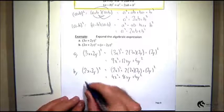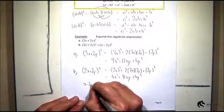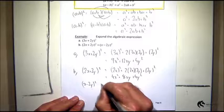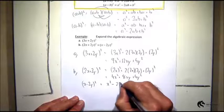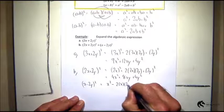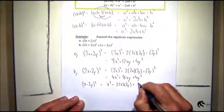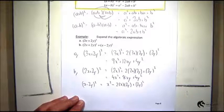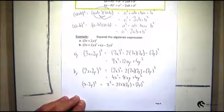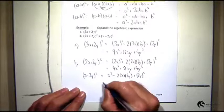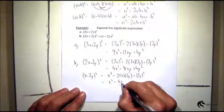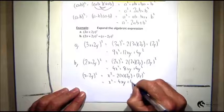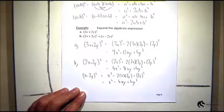Likewise, (x - 2y)² will be x² - 2 times x times 2y + (2y)², which I can write as x² - 4xy + 4y².